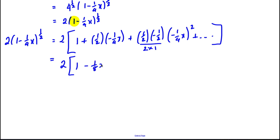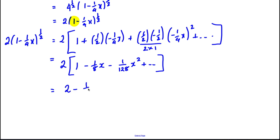...minus x²/128, and then multiplying through by 2, we get 2 minus x/4 minus x²/64 and so on. This is our expansion of (4 − x)^(1/2).